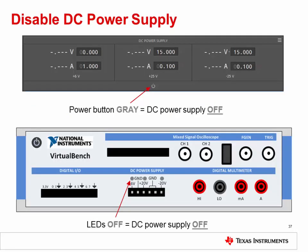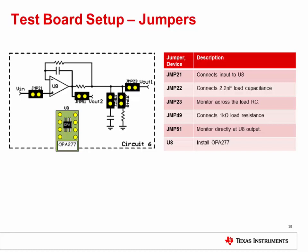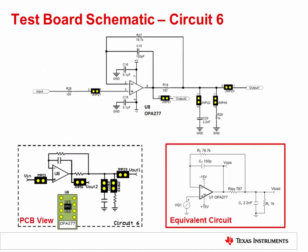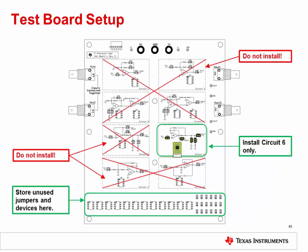Make sure to disable the DC power supply before setting up the test PCB. In the VirtualBench software, click the power button in the DC power supply area to turn off the power. Check the front panel of the VirtualBench unit to make sure the LEDs are off. Also ensure that the function generator is off. To prepare the test board for measurement, install the jumpers and devices on circuit 6 as shown here. Install JMP21, JMP22, JMP23, JMP49, and JMP51. Install the OPA277 in socket U8. This slide shows the full schematic for circuit 6 on the TI Precision Labs test board. You will use this circuit to measure the transient behavior of the OPA277 in a dual feedback configuration. It is important that you only install jumpers and devices in circuit 6. Do not install any jumpers or devices in any other circuits on the PCB. Remove any jumpers or devices from the unused circuits and store them in the storage area at the bottom of the test board.